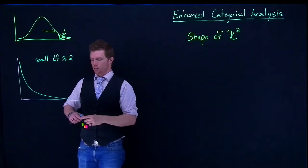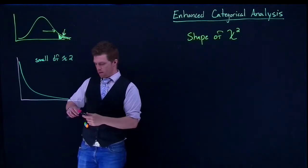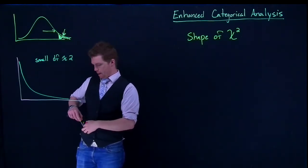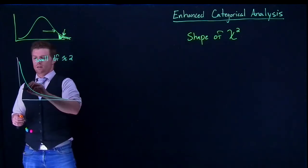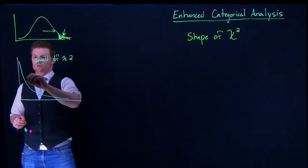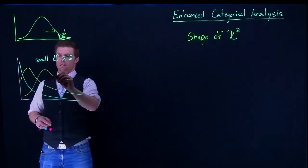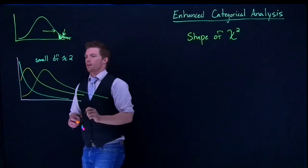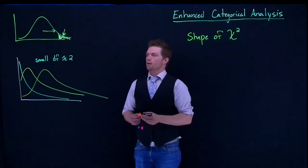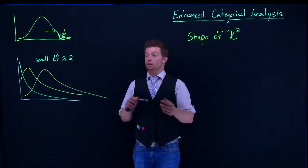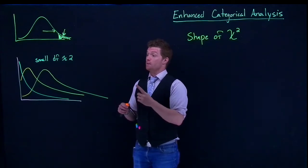It's kind of this distribution, but when we get bigger and bigger, what starts to happen is we start to deviate away from this and get more and more like that as our degrees of freedom increases.